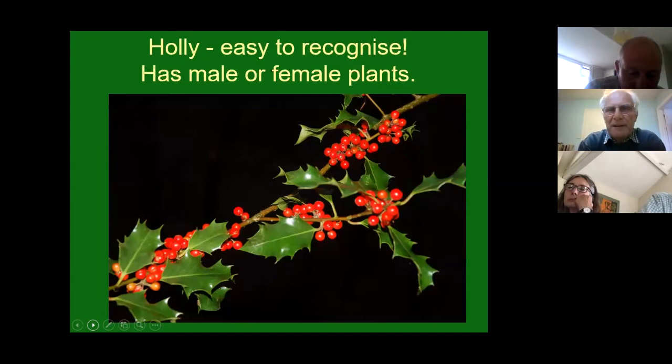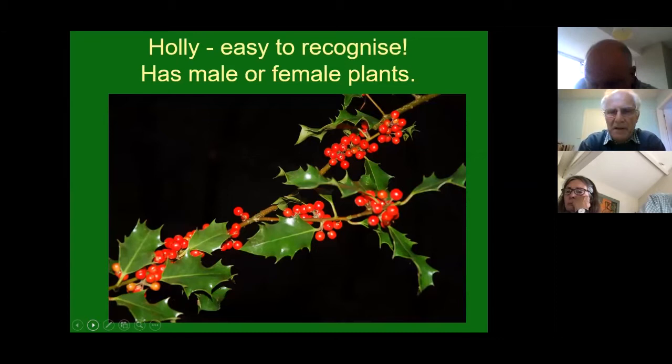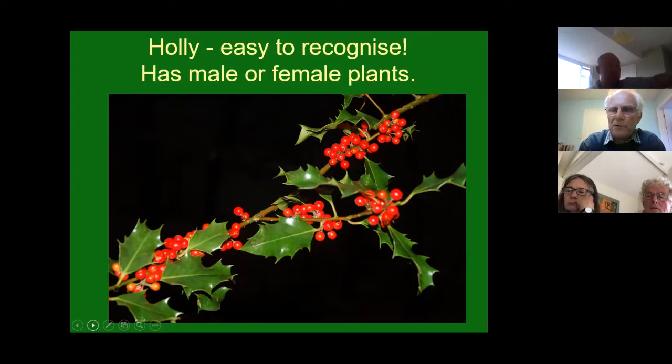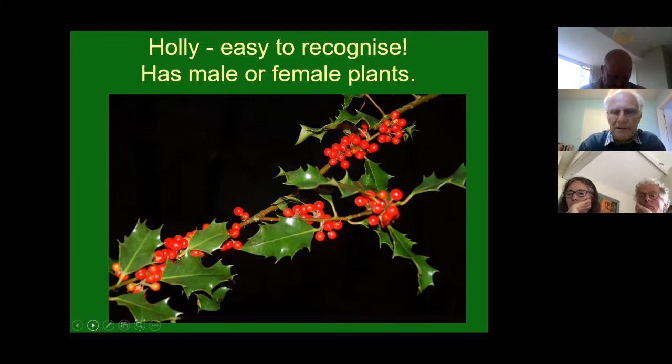Some plants are very easy and straightforward - hopefully everybody can recognise holly. It generally has sharp, prickly leaves, although higher up the tree they may lose some spines - the trees are particularly prickly where animals can reach them because they're quite palatable. The female plants have berries, but trees are either male or female, so you'll have male flowers on some trees and female flowers on others. They don't tend to produce many berries in the shade, so in the shade of a beech wood you can't always tell whether it's male or female, but on the edges where there's enough light you will get berries on female plants.